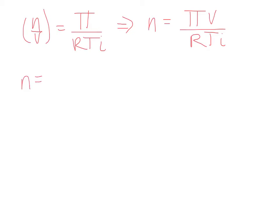So n equals π, which we've converted to atmospheres to match the units in our universal gas constant R: 0.00125 atmospheres times the volume, converted to liters to match the units in our universal gas constant.